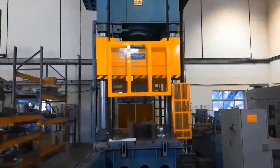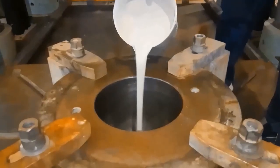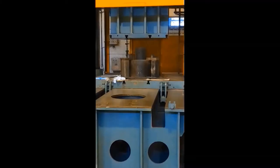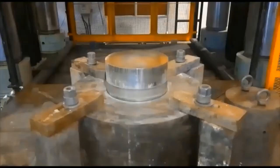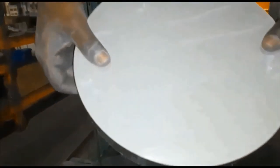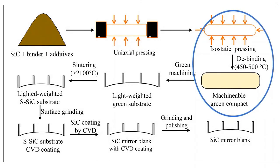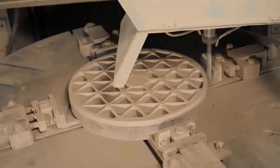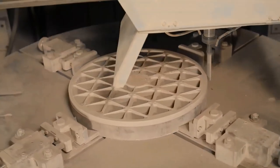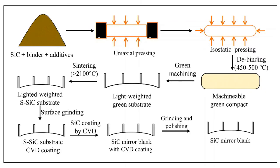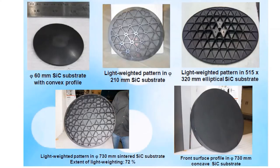Powder formulated with organic binders and sintering additives is used as the raw material in this process. Initially, raw silicon carbide powder is compacted into simple shapes by uniaxial pressing. Following powder compaction, parts are subjected to cold isostatic pressing and then low temperature heat treatment. Green substrates are then subjected to light weighting and profile generation in a CNC machine. The machined parts are then sintered at high temperature under an inert atmosphere.